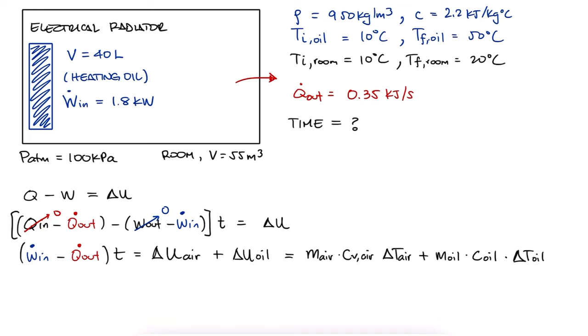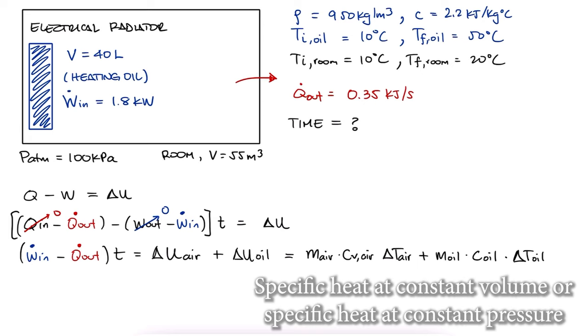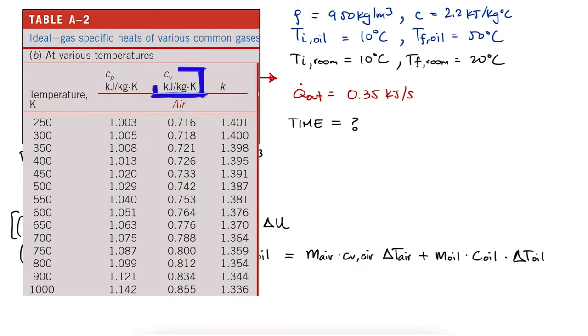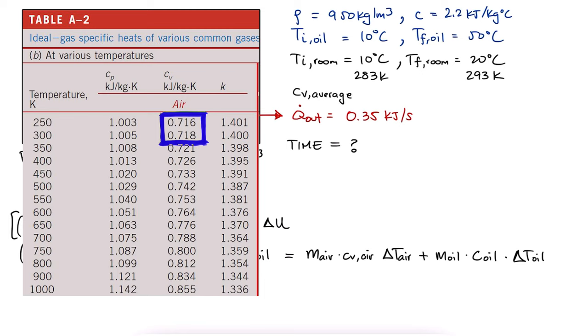For the oil, we are already being given the specific heat, and since it's a liquid it's fine that we weren't specified what type of specific heat it is. For the air, we want the specific heat at constant volume Cv. We look it up from our tables and find that the average between 10 and 20 degrees Celsius, or the average between 283 and 293 Kelvin, would be between 0.716 and 0.718, but much closer to 0.718. We could interpolate, but in this case it's not going to make much of a difference.